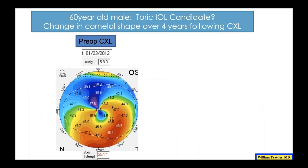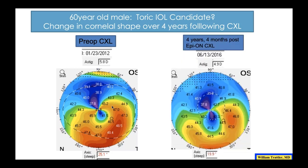One question that comes up: if you place a toric lens in a patient with a more symmetrical pellucid pattern and then cross-link them over time, what happens to the axis? This patient had cross-linking in 2012 and four months later their astigmatism had dropped from 5.8 to 4.9 diopters, and the axis shifted by five degrees — from 25.1 to essentially 20 degrees. So with a toric lens, you'd get a slight reduction in effectiveness as the cornea shifts. But I would still use a toric lens because of the high amounts of astigmatism and because patients are relatively stable over time.